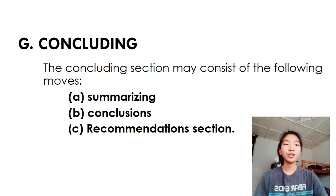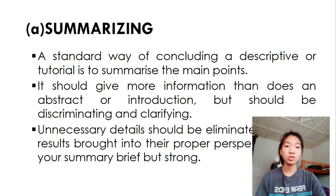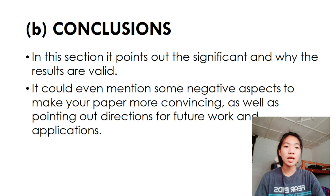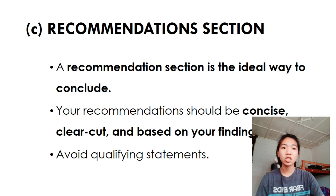Now for concluding, the concluding section may consist of the following moves: summarizing, conclusions, recommendations sections. For summarizing, a standard read of concluding a descriptive or tutorial is to summarize the main points. It should give more information than does an abstract or introduction, but should be discriminating and clarifying. Unnecessary detail should be eliminated and your results brought into the proper perspective make your summary brief but strong. And for conclusions, in this section points out the significance and why the results are valid. It could even mention some negative aspects to make your paper more convincing as well as pointing out the direction for future work and application. And for recommendation sections, a recommendation section is the ideal way to conclude. Your recommendation should be concise, clear-cut, and based on your findings. Avoid qualifying statements.